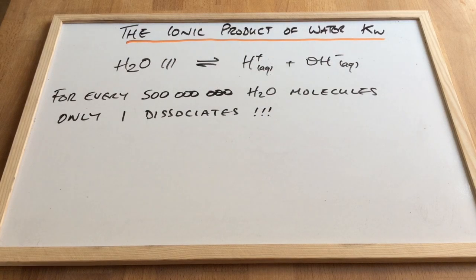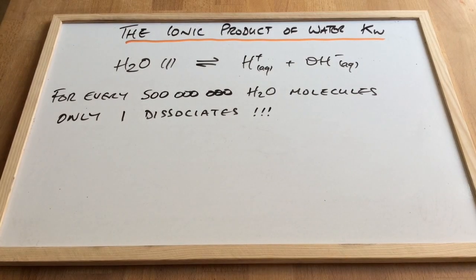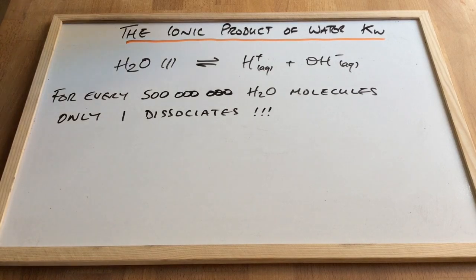So we're going to go back to that partial dissociation of water now. And you can see written up there, for every 500 million water molecules, only one dissociates. So it's safe to say that this equilibrium is very much on the left hand side.